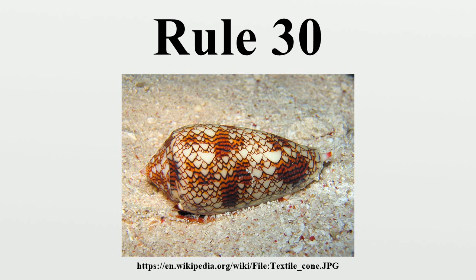Rule 30 generates seeming randomness despite the lack of anything that could reasonably be considered random input. Stephen Wolfram proposed using its center column as a pseudo-random number generator. It passes many standard tests for randomness, and Wolfram uses this rule in the Mathematica product for creating random integers. Although Rule 30 produces randomness on many input patterns, there are also an infinite number of input patterns that result in repeating patterns. The trivial example of such a pattern is the input pattern only consisting of zeros.